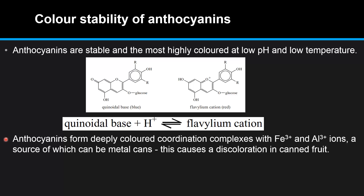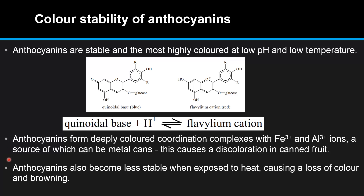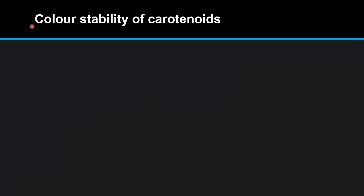Anthocyanins form deeply colored coordination complexes with Fe³⁺ and Al³⁺ ions, a source of which can be metal cans. This causes a discoloration in canned fruit. Anthocyanins also become less stable when exposed to heat, causing a loss of color and browning.